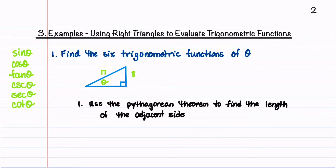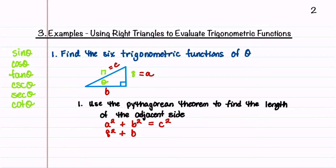Let's label our sides. I'm going to label the right side as A, the bottom side as B, and we'll call the hypotenuse C. The Pythagorean theorem states that A squared plus B squared is equal to C squared. We can now plug in the values: A is 8, so we have 8 squared plus B squared equals 17 squared. So 8 squared is 64, plus B squared equals 289.